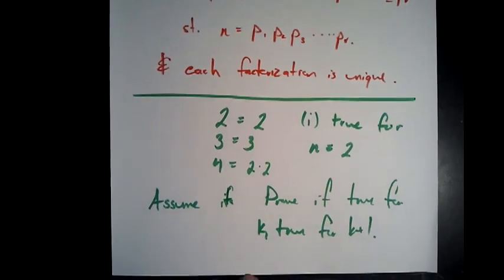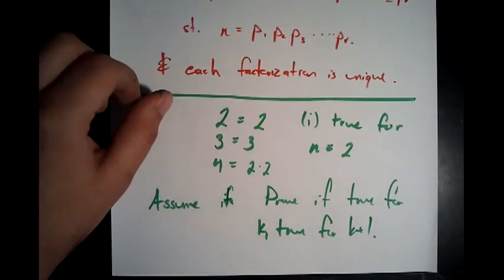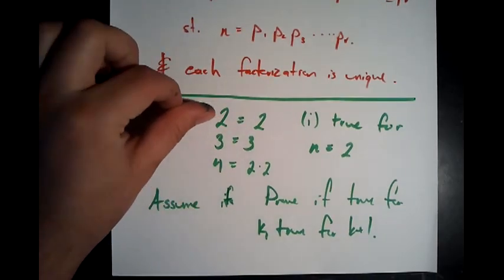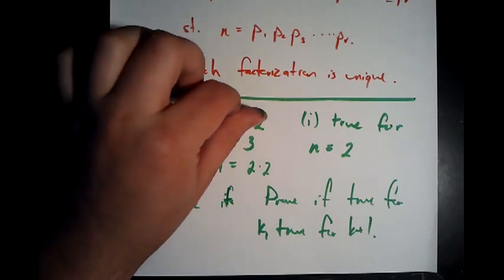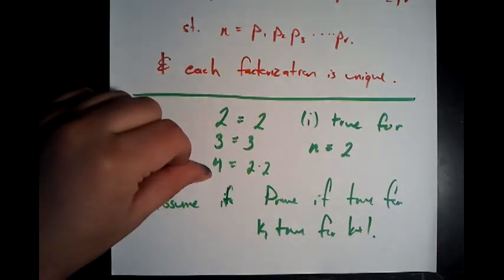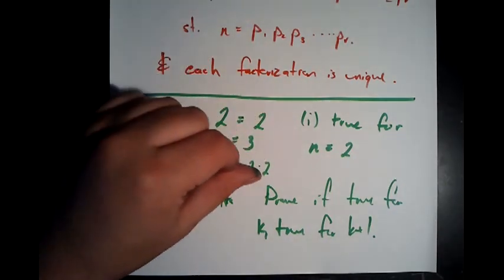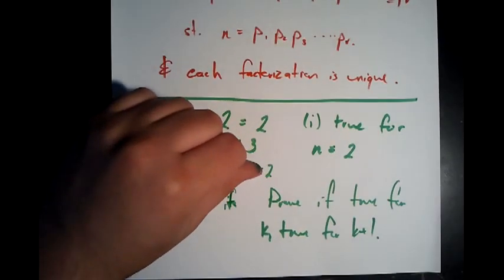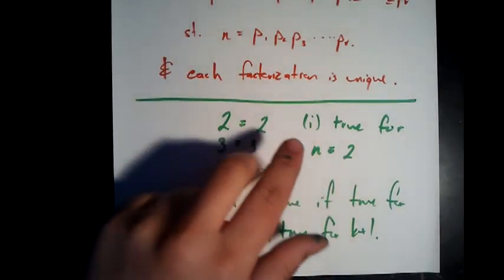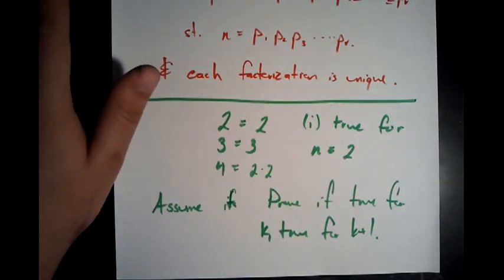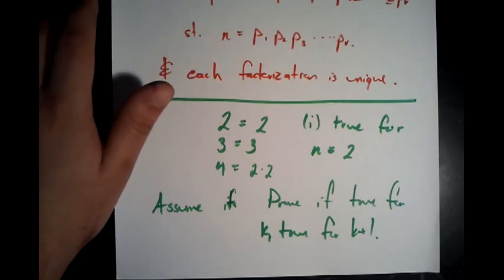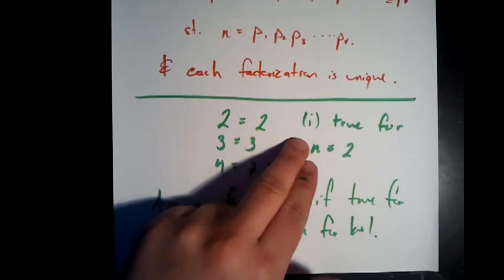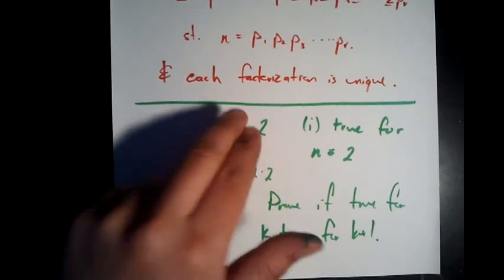Down here I've written out some of the starting cases. So 2 is good — it meets the conditions because it can be written as a product of primes itself. 3, same idea. 4 can be written as a product of two primes: 2 times 2. So we're going to use induction first to show that for every integer n greater than 1, this is true. Here's our base case: true for n equals 2. We know — we're good.